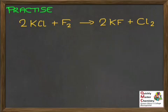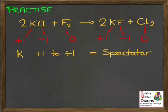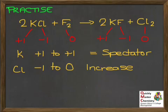Practice makes perfect, so here's a final example. Pause the video and work this one fully through for yourself. As before, the first step is to work out all the oxidation states, which should give us these values. Then we can see what's happened going from left to right. The K goes from plus 1 in KCl to plus 1 in KF — it's a spectator. On the left, the Cl is minus 1 in KCl; by the time it gets to the right, it's the unreacted element Cl2, so 0. That's an increase in oxidation state, so the chloride ions in the KCl have been oxidised.